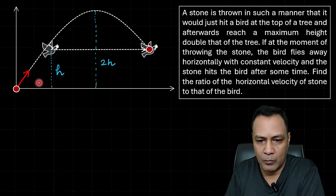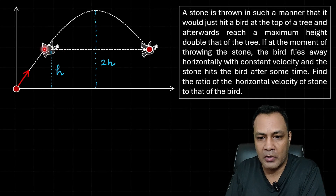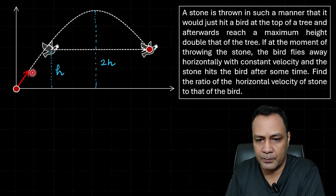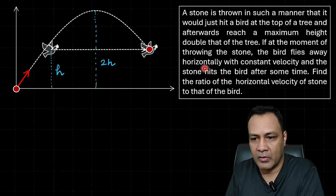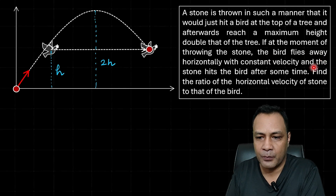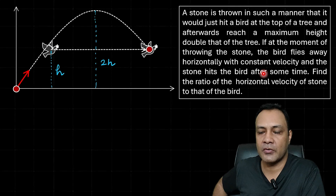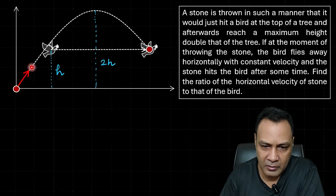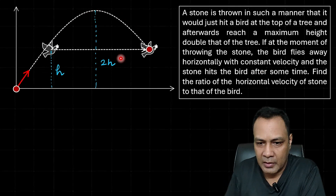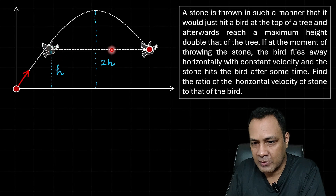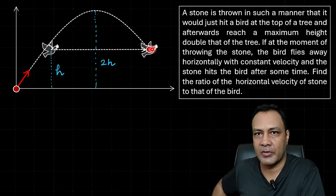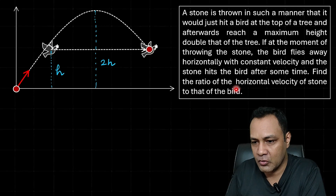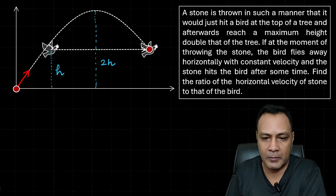At the moment of throwing the stone, the bird flies away horizontally. The stone moves along its parabolic path and the bird flies horizontally with constant velocity. The stone eventually hits the bird. We have to find the ratio of the horizontal velocity of the stone to that of the bird.